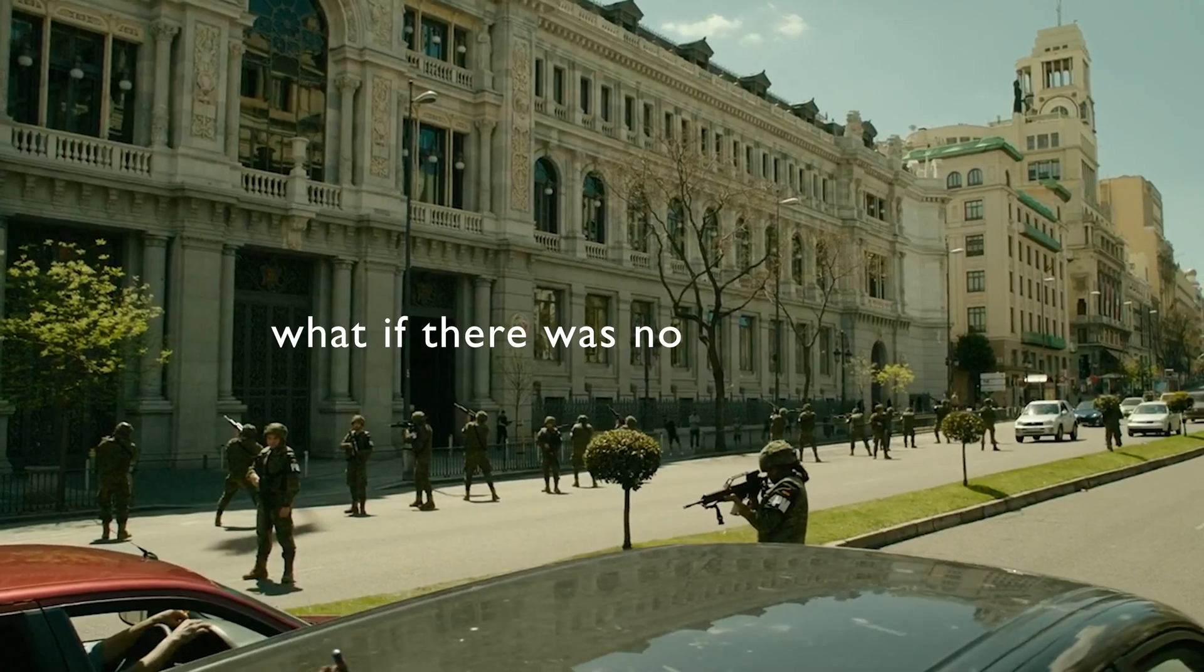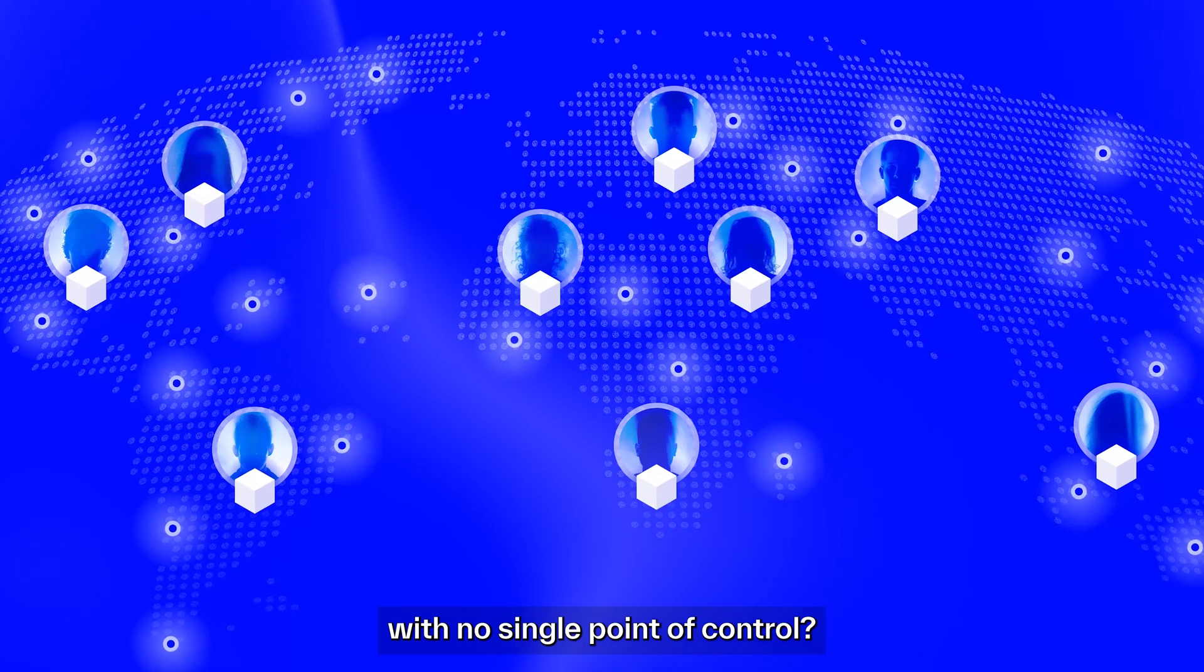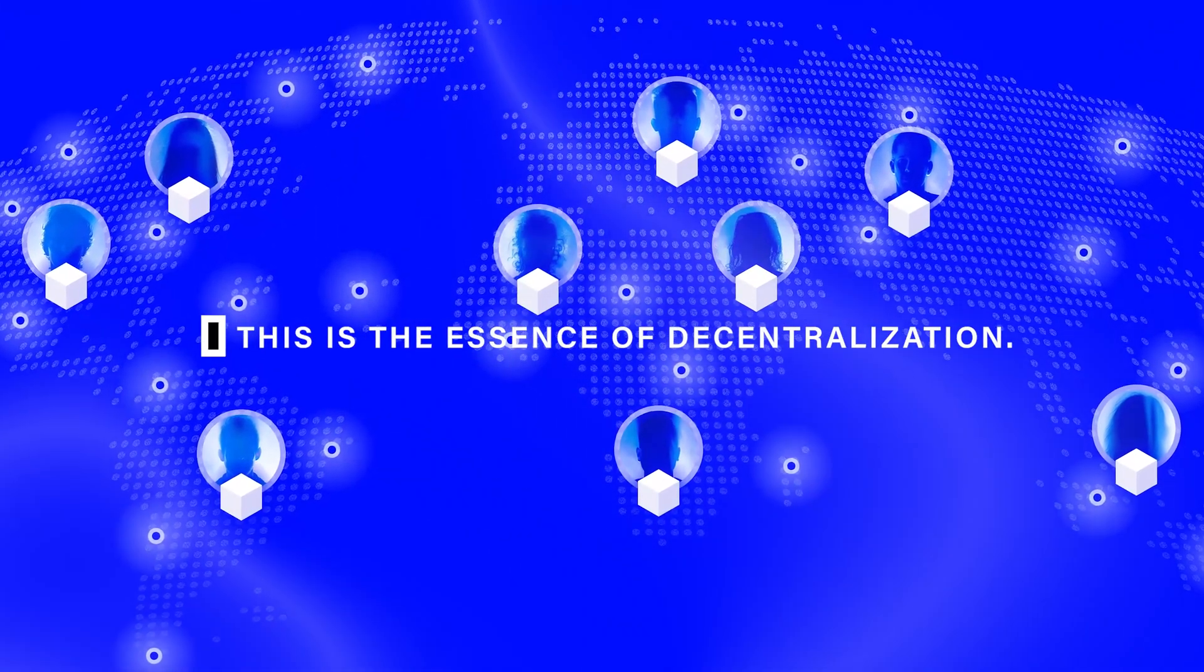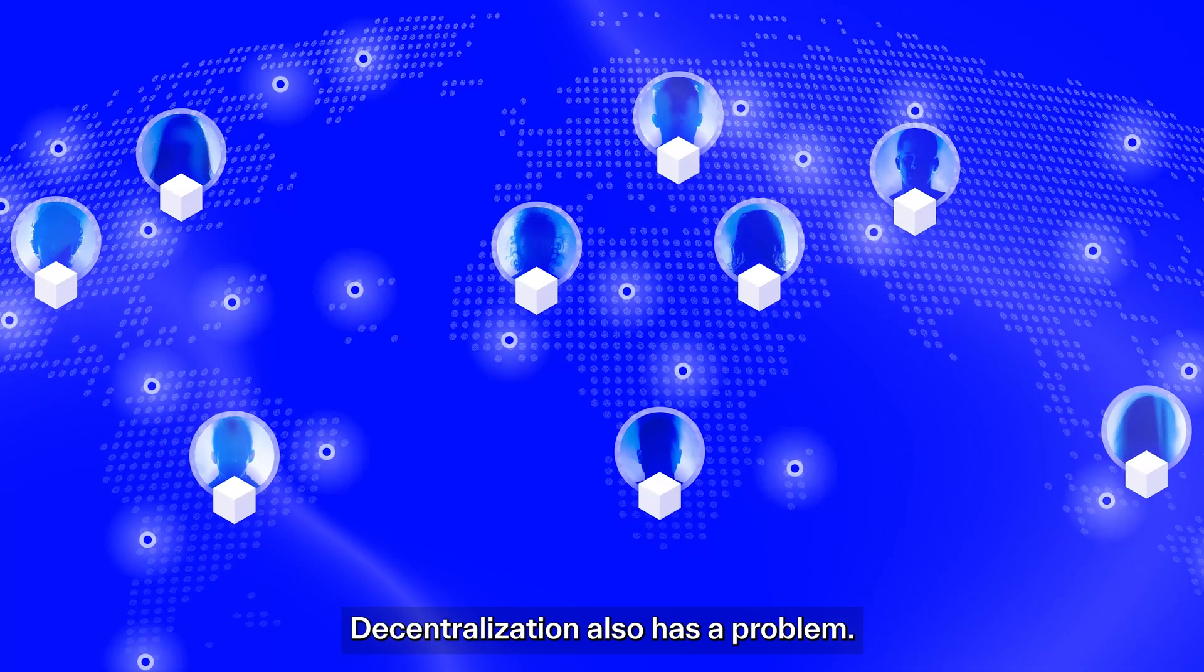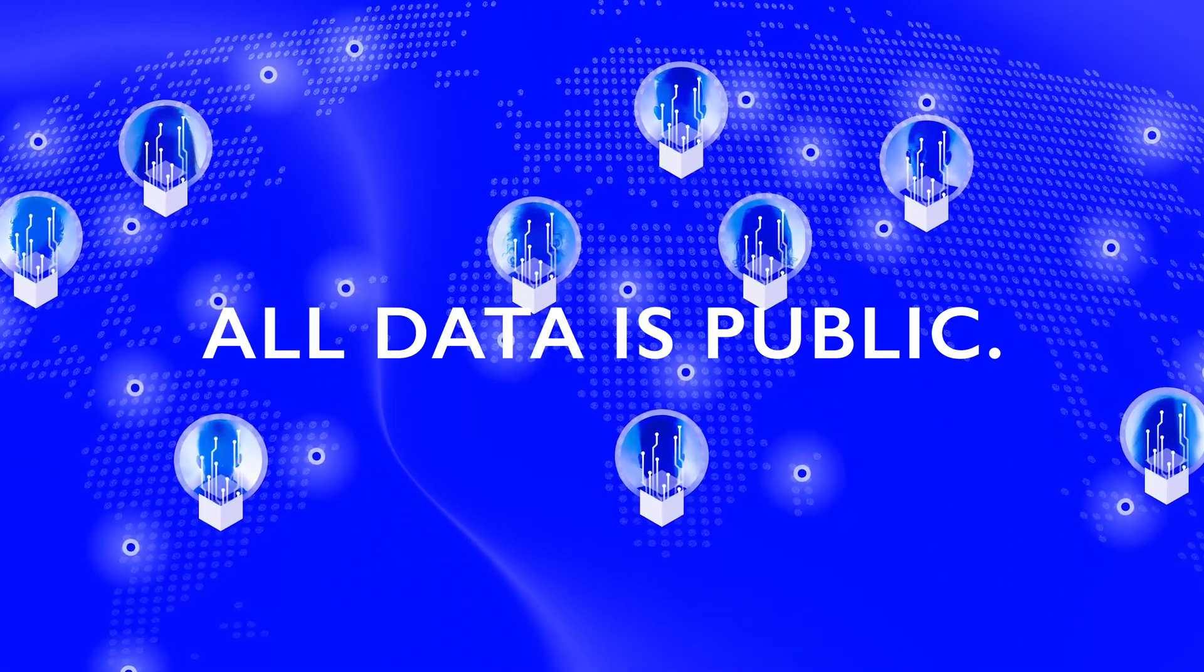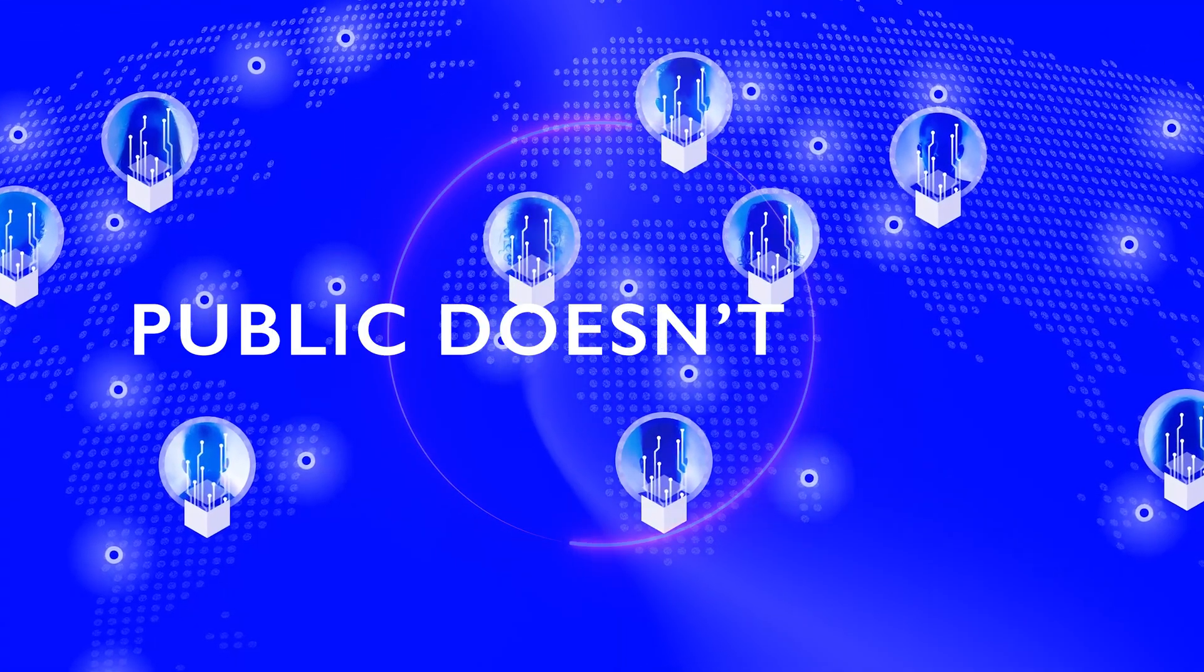But what if there was no gatekeeper? What if the data was spread across a network with no single point of control? This is the essence of decentralization. Decentralization also has a problem. By its nature, all data is public. And in a world where your level 3 data needs to be protected, public doesn't work.